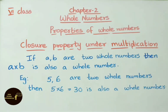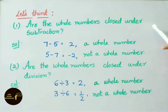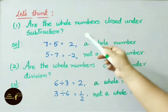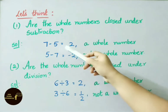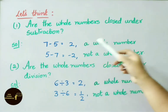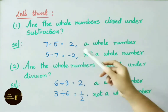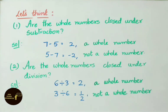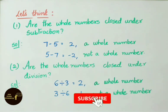Therefore, whole numbers are closed under addition and multiplication. Now let us think: are whole numbers closed under subtraction? For example, 7 minus 5 equals 2, which is a whole number. But 5 minus 7 equals minus 2, which is not a whole number. Therefore, whole numbers are not closed under subtraction.